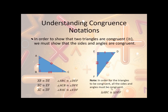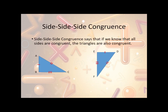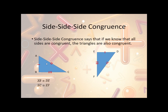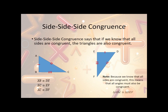So we can now say that triangle ABC is congruent to triangle DEF. Now let's take a look at side-side-side congruence. What side-side-side congruence says is that if we know that all the sides are congruent, then the triangles must also be congruent. So we can say AB is congruent to DE, BC is congruent to EF, and AC is congruent to DF. Therefore, triangle ABC is congruent to triangle DEF.